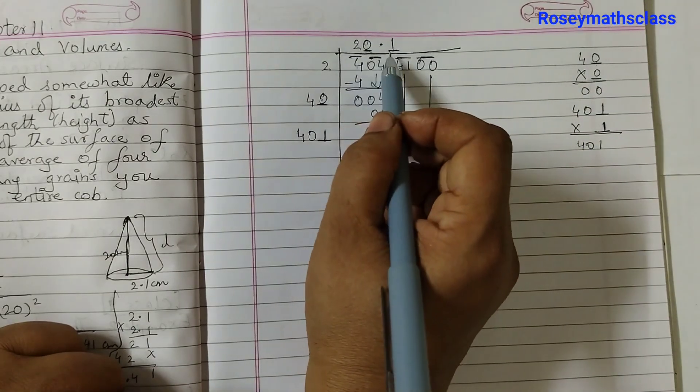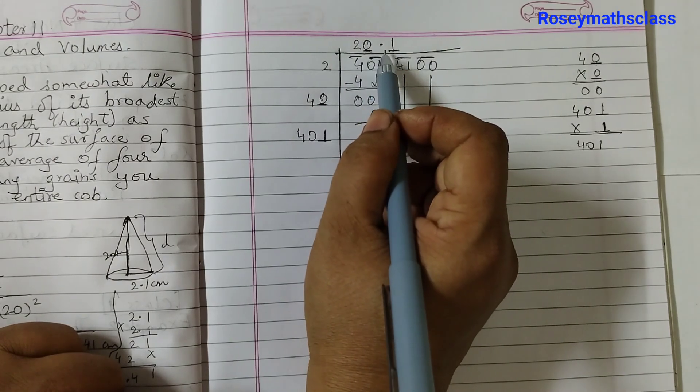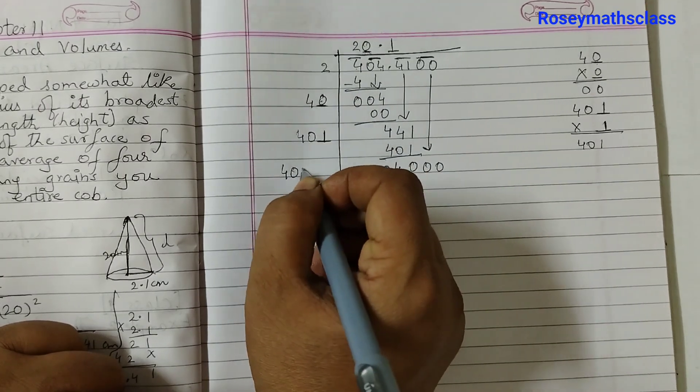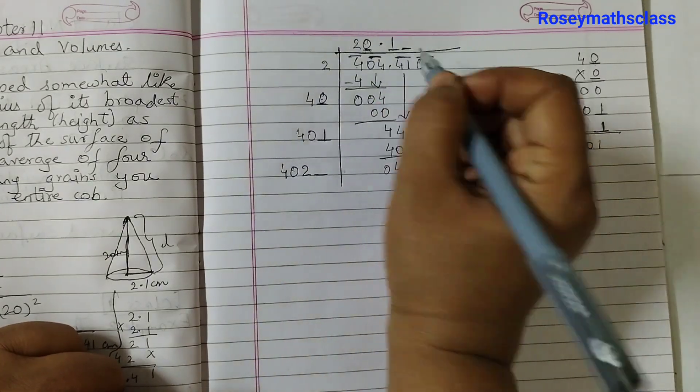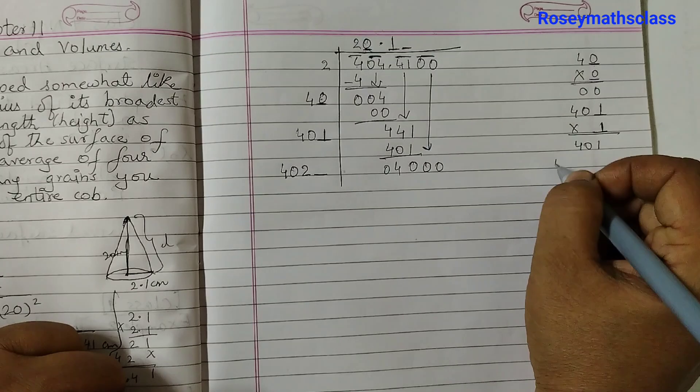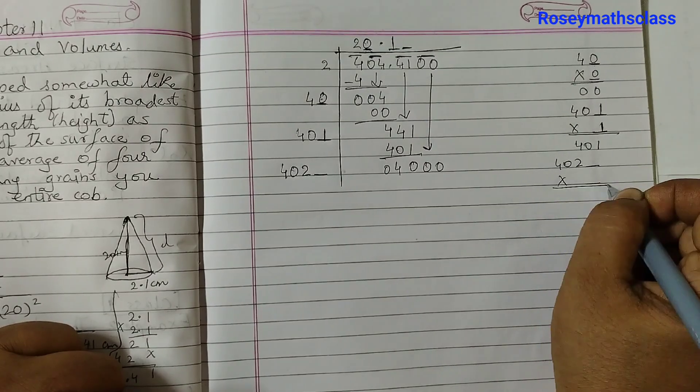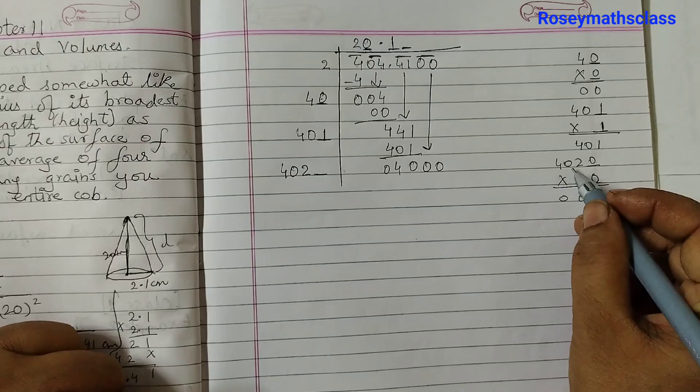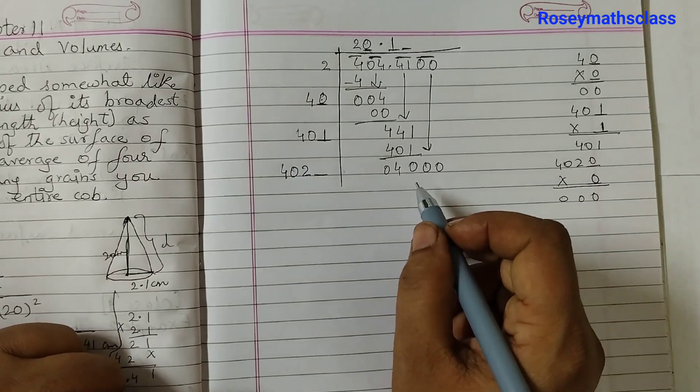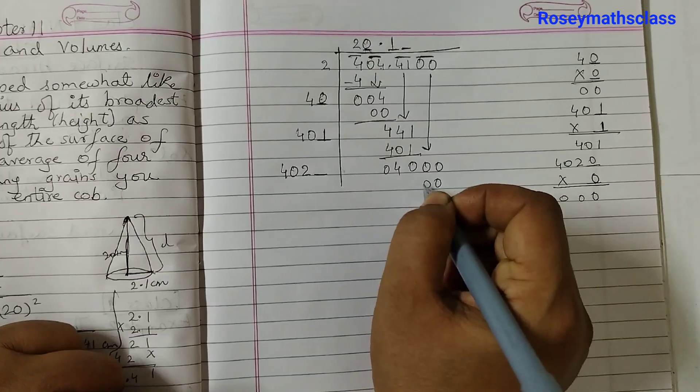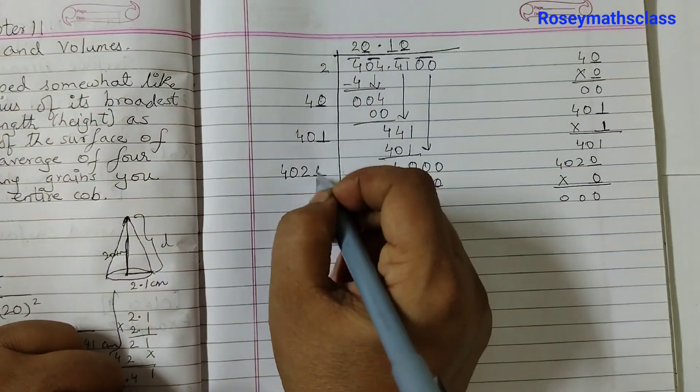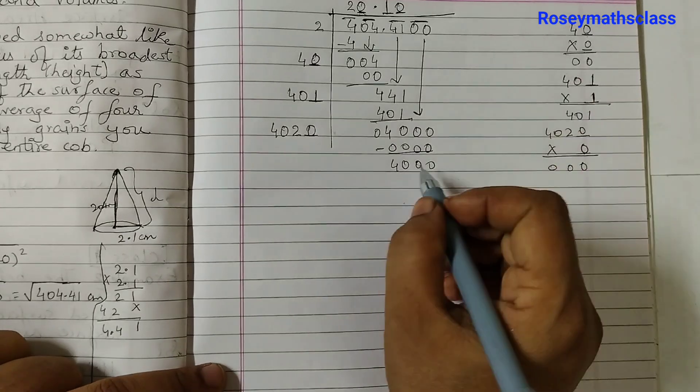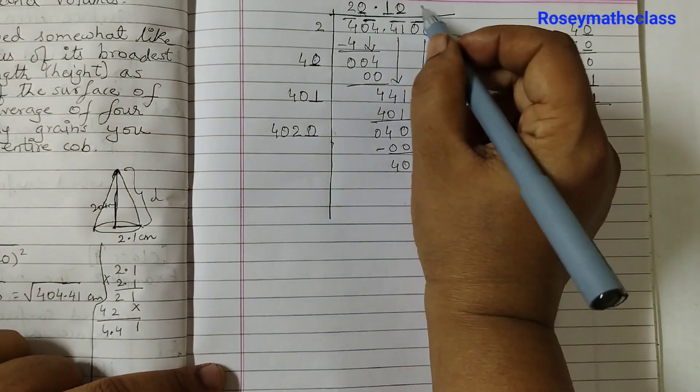So this will become 4000 now and 201, ignore the decimal point, 201 double of that would be 402. So my new divisor is 402 and then one digit would come here and the same digit we need to put here. So 402 what digit should we put so that we get something which is less than 4000? So the only digit we can put is 0 because if I put 1 it will be 4021 that is greater than this. So this will be again 0. So this becomes 4000 we are subtracting.